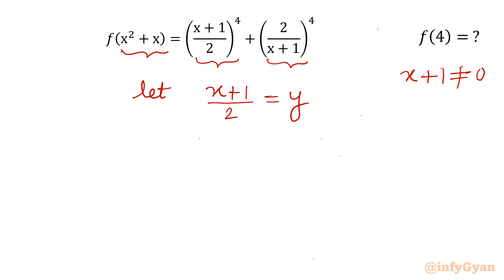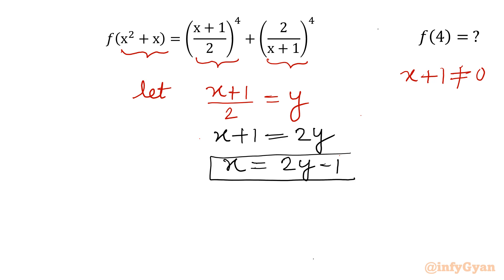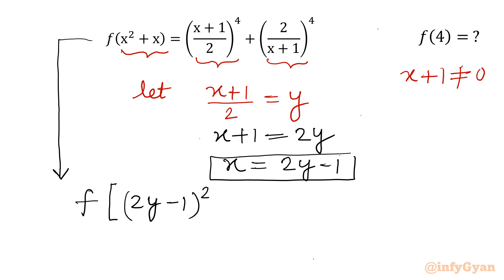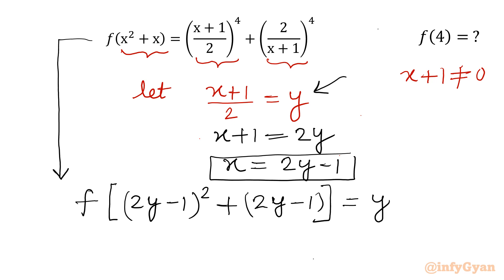For the left-hand side, we have to rewrite in terms of y. Since (x+1) equals 2y, we get x equal to 2y minus 1. So the equation becomes f of (2y minus 1) squared plus (2y minus 1) equal to y to the power 4 plus 1 over y to the power 4.